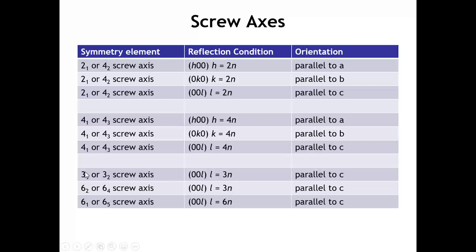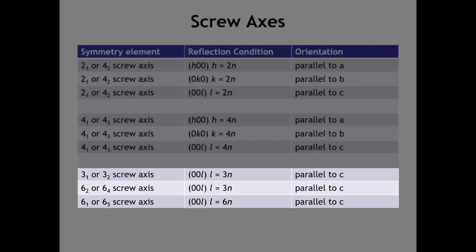For 3-fold or 6-fold screw axes — generally only seen parallel to the C axis — if you have a 3₁ or 3₂ screw parallel to C, you only see 00L peaks where L is a multiple of 3. The same conditions apply for a 6₂ or 6₄ screw axis. And for either a 6₁ or 6₅ screw axis, we only see the 00L reflections where L is a multiple of 6.